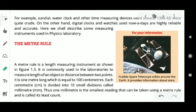For example, sundials, water clocks, and other measuring devices were used before 1300 AD when science was not so advanced. These instruments were used for measuring different physical quantities like time and distance.